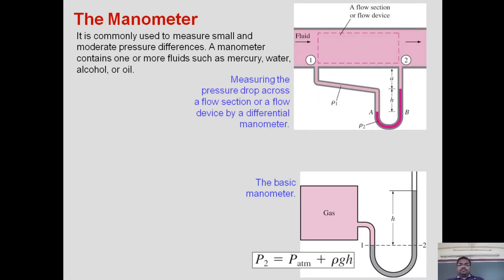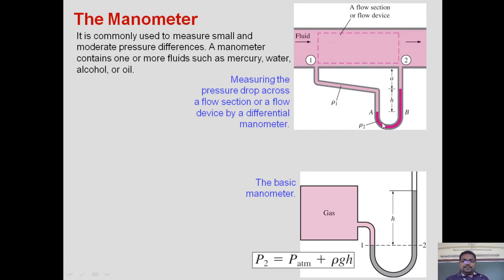The second type is called a differential manometer, which measures the pressure difference between two different locations. In this diagram, points 1 and 2 are the two locations where the U-tube manometer is attached. The pink-colored manometric fluid is filled in the U-tube, and flow is going from left to right through the pipe. The point where the pipe liquid meets the manometric fluid is the reference junction, and the line a-b is considered as the reference.